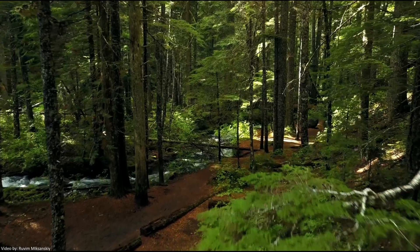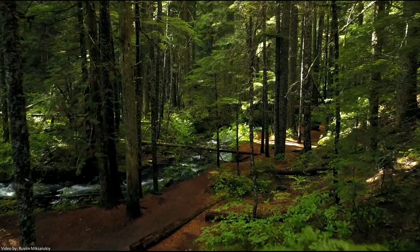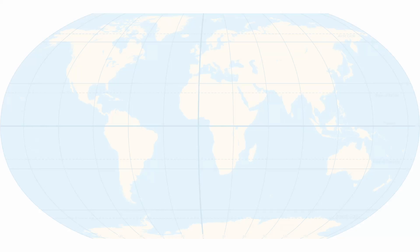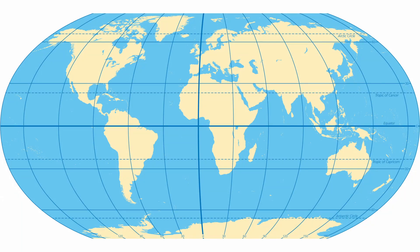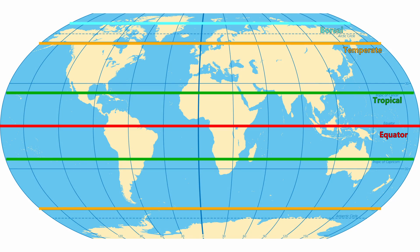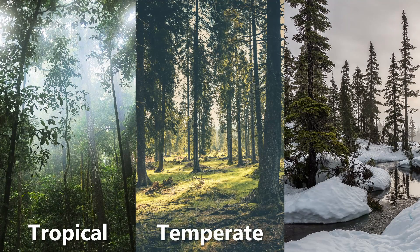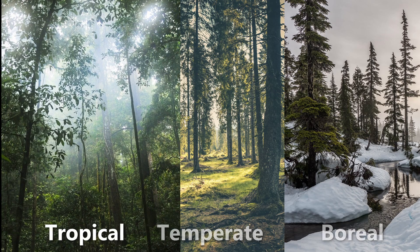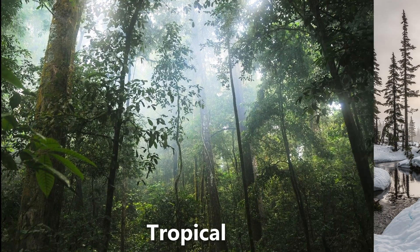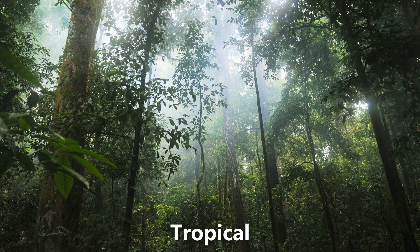Generally speaking, there are three major types of forests, categorized broadly by their distance to the equator. Different latitudes mean different types of forests. There is the tropical forest, the temperate forest and the boreal forest. Let's first take a closer look at the tropical forest.